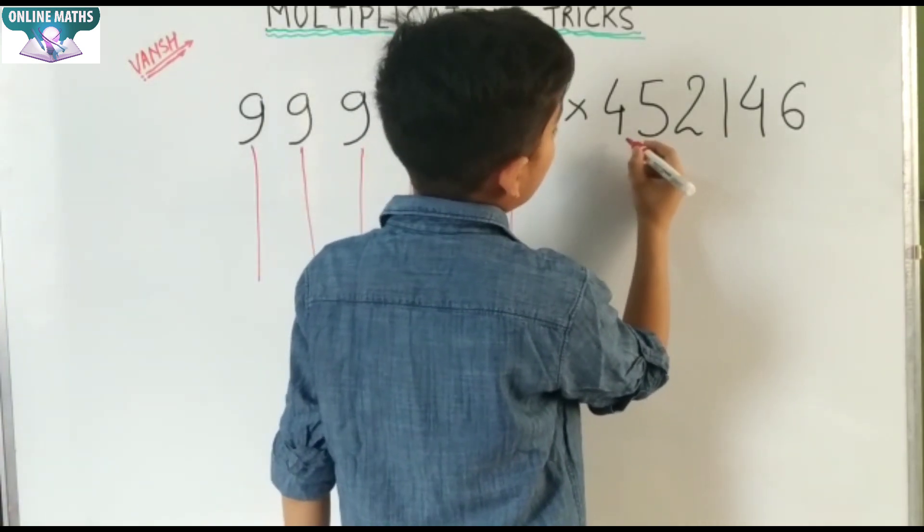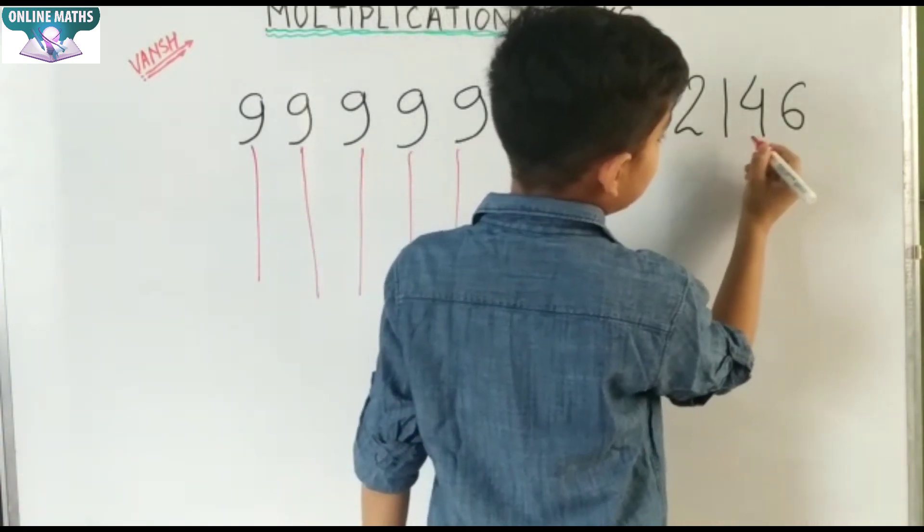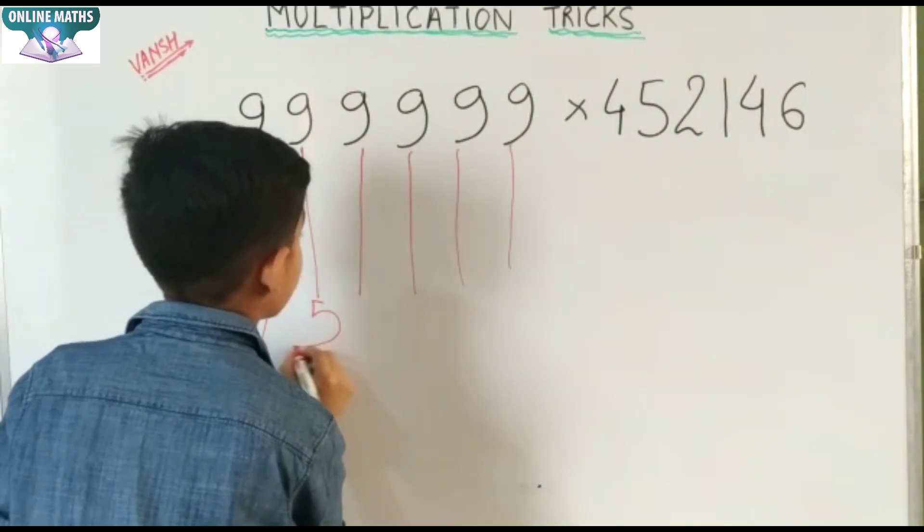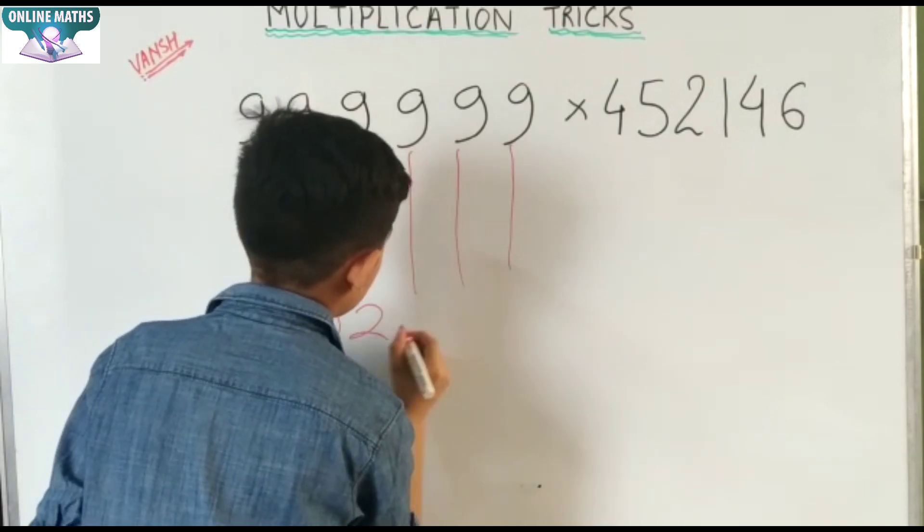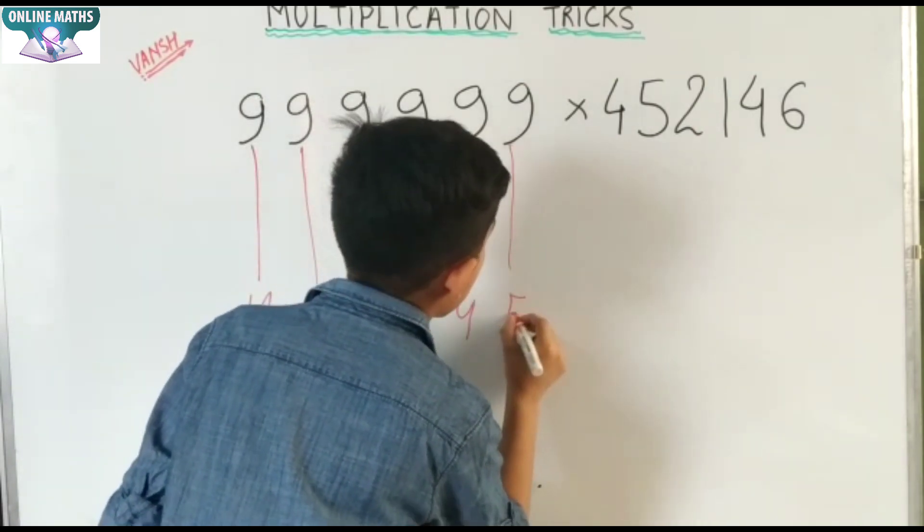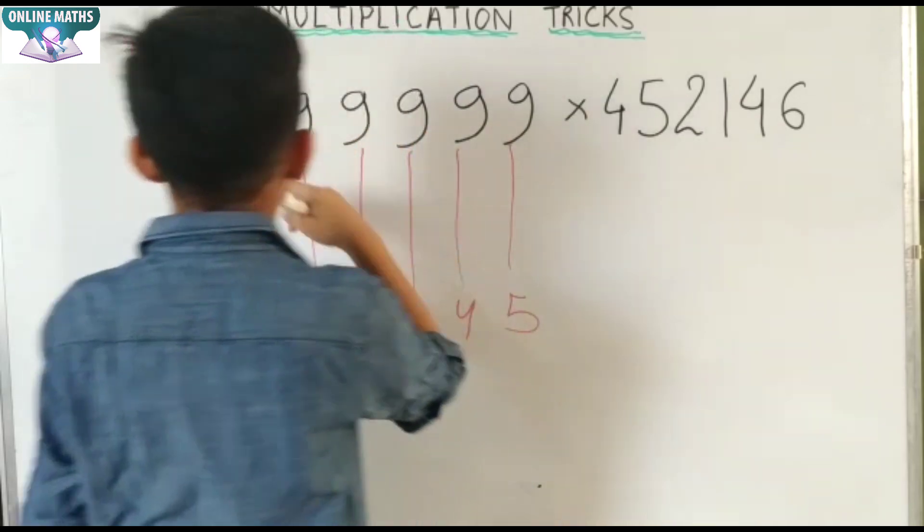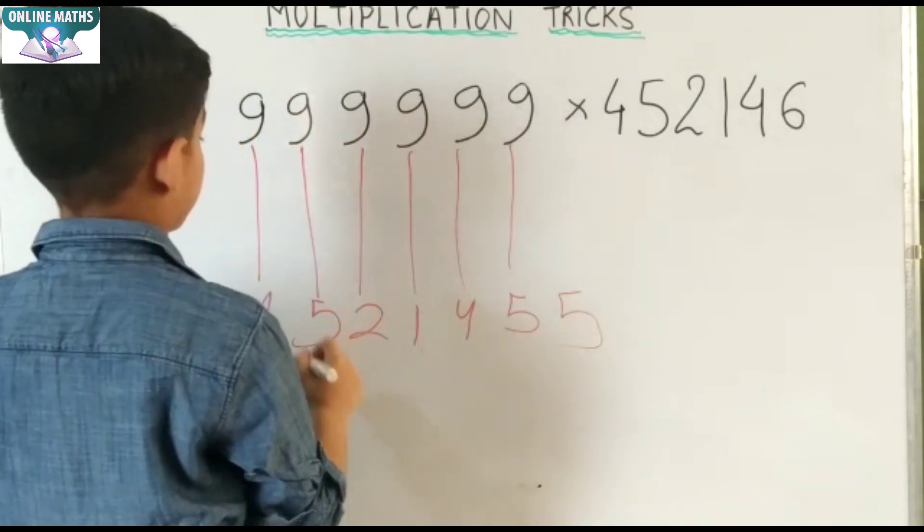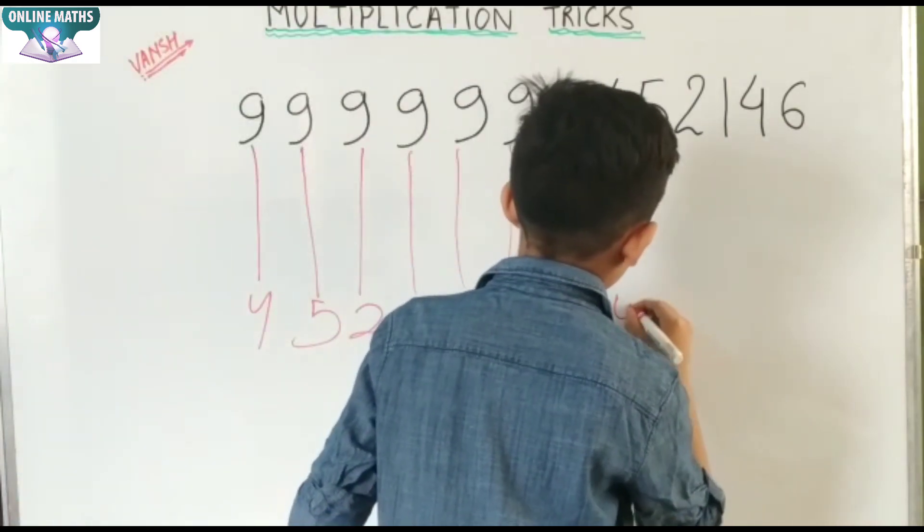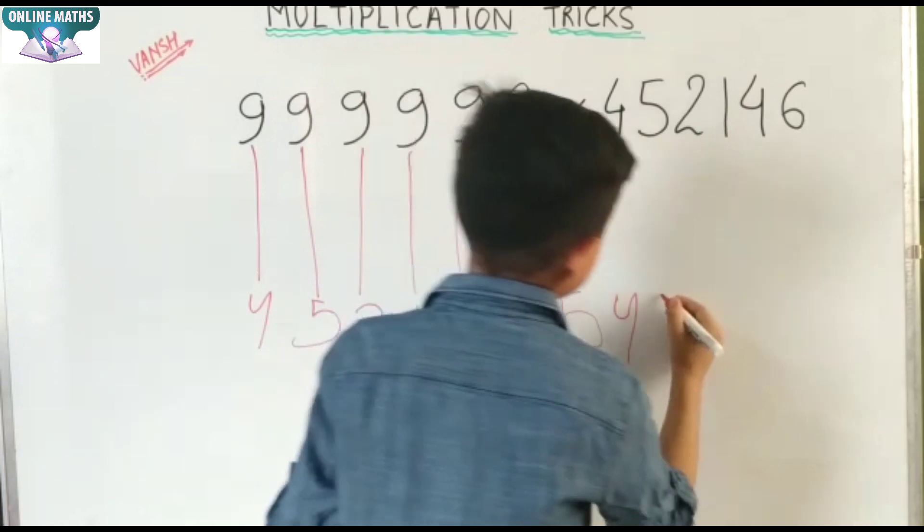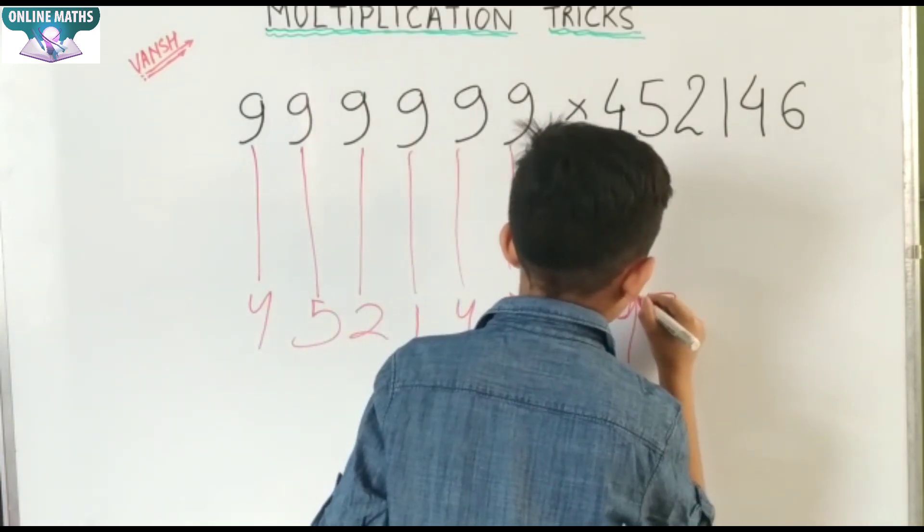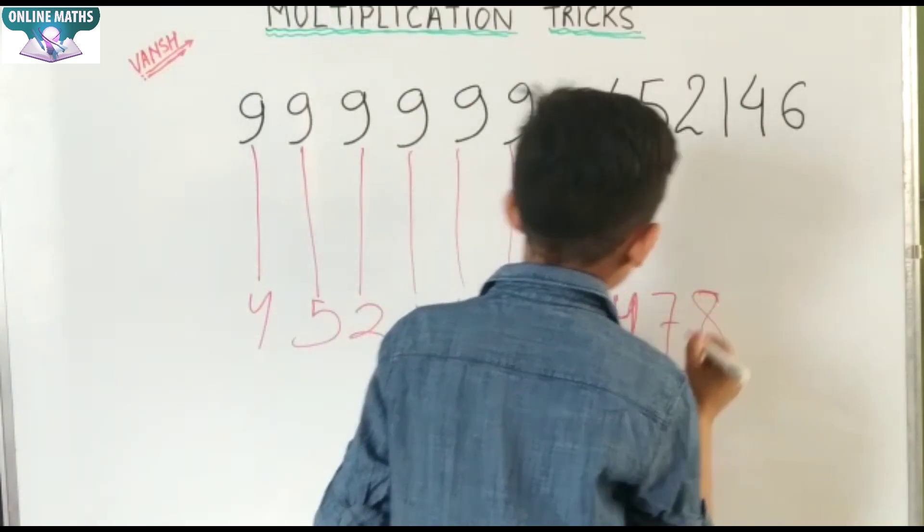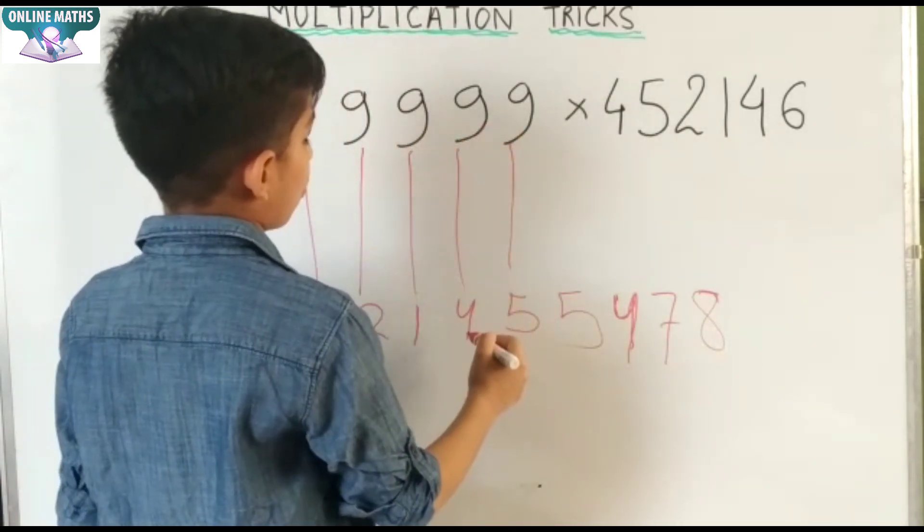One lesser number of 452146 is 452145, then minus 9 minus 4 is 5, 9 minus 5 is 4, 9 minus 2 is 7, then 9 minus 1 is 8, 9 minus 4 is 5.